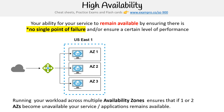Running a workload across multiple availability zones — which is what Azure calls their data centers — ensures that if one or two data centers become unavailable, your service will remain available. It's very common to run at least three servers across three data centers.